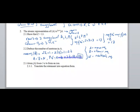Atom A loses 3 electrons to form an ion. When an atom loses electrons it becomes a positive ion. Since A loses 3 electrons, we write: A → A³⁺ + 3 electrons. The charge of the ion will be 3 plus, or +3.